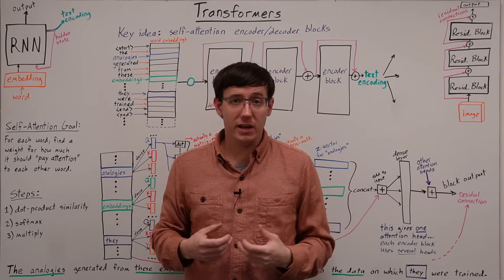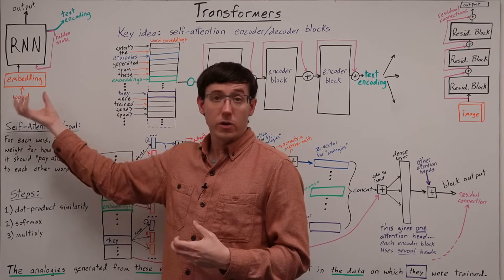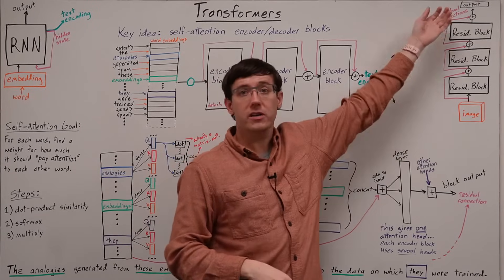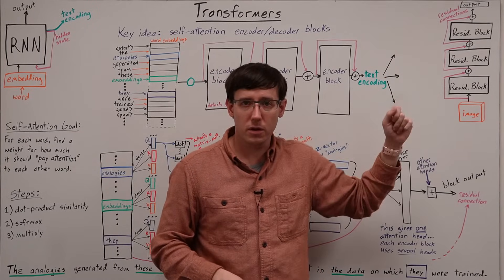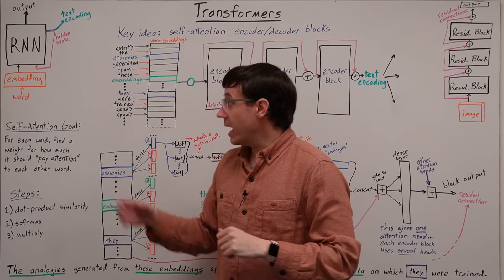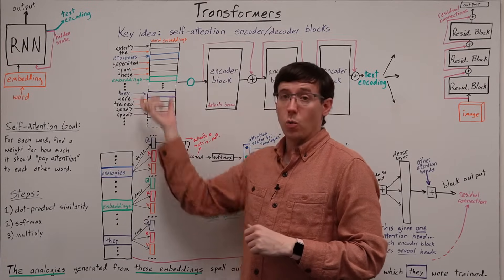So we'd like some way of combining the advantages in processing text of recurrent networks with the advantages in learning deep models of residual networks, and that leads us to the transformer. Much like a recurrent network, a transformer operates on word embeddings.